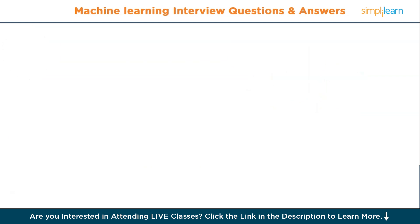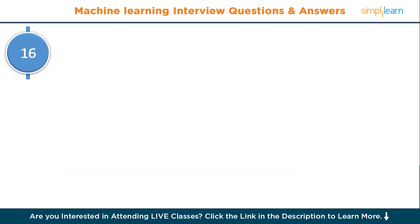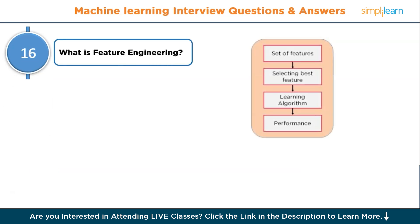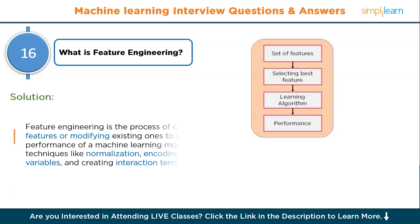Moving to question number sixteen: what is feature engineering? Feature engineering is the process of creating new features or modifying existing ones to improve the performance of a machine learning model. It involves techniques like normalization, encoding categorical variables, and creating interaction terms.